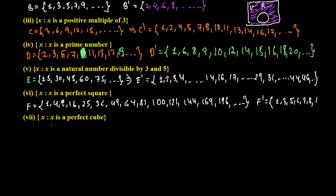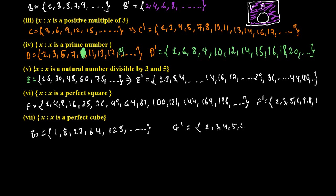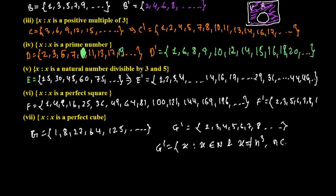Now set G, where X is a perfect cube. The perfect cubes are: 1³=1, 2³=8, 3³=27, 4³=64, 5³=125, and so on. G complement means all natural numbers not containing these cubes. So it is 2, 3, 4, 5, 6, 7, skip 8, and so on. You can also write G complement in set-builder notation as: {X | X ∈ ℕ and X ≠ n³ where n ∈ ℕ}.